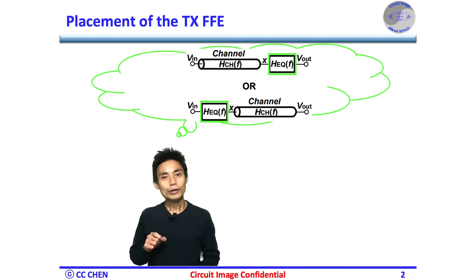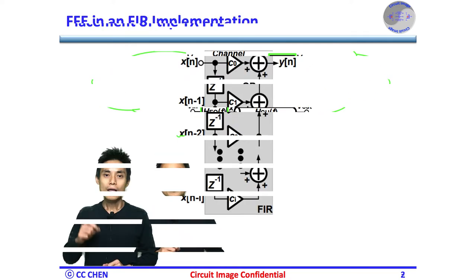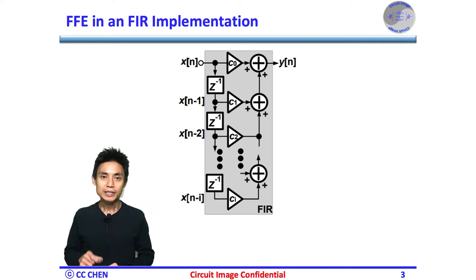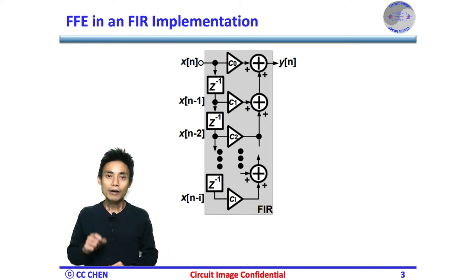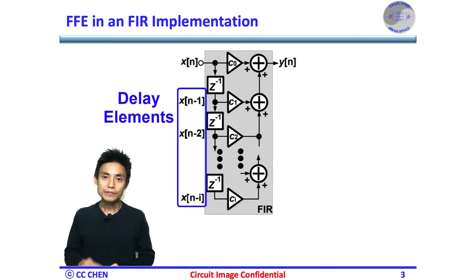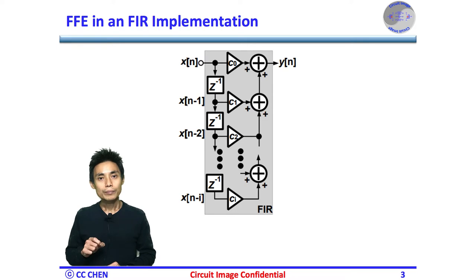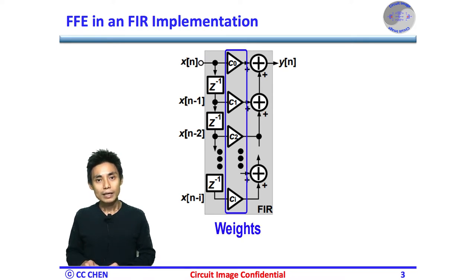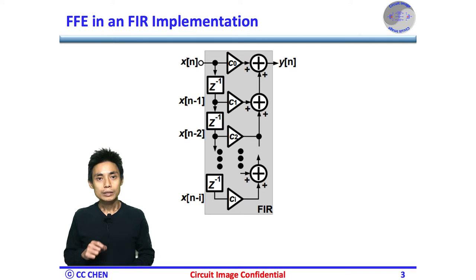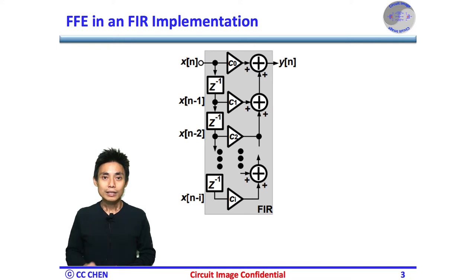What is the feedforward equalizer, and why is it better to put the FFE on the TX side? The feedforward equalizer FFE is like a digital finite impulse response FIR filter. The FFE creates delayed versions of the input signals — X of n-1, X of n-2, X of n-i, etc. — that are added together with proper weights CI to generate the output Y of n. Since each data sample is one UI apart, the delay is one UI in duration for the TX FFE.